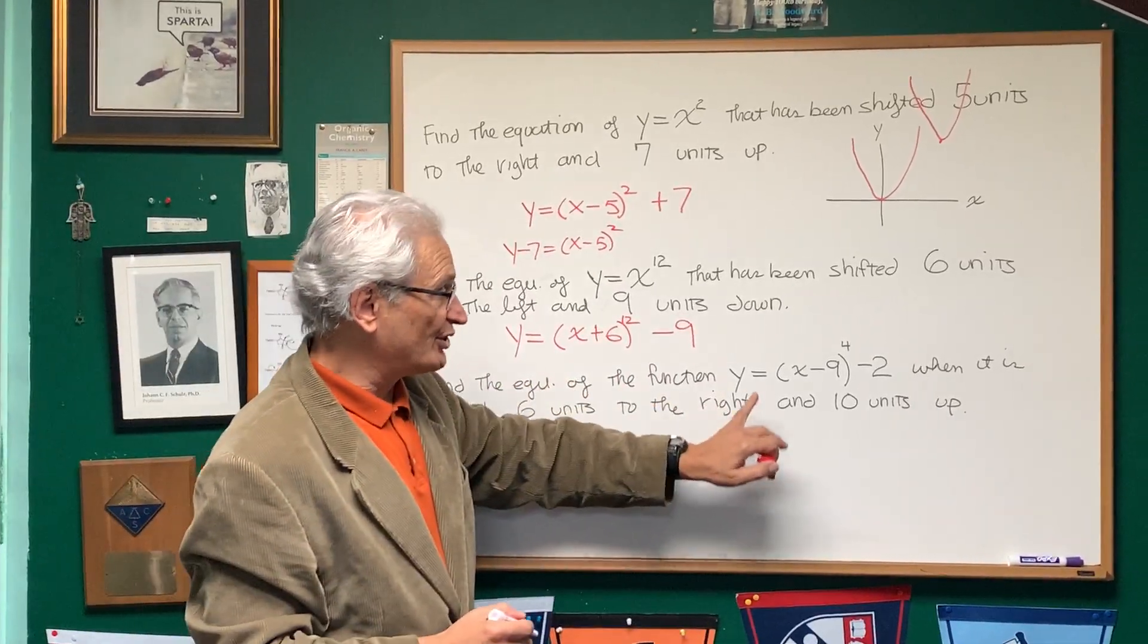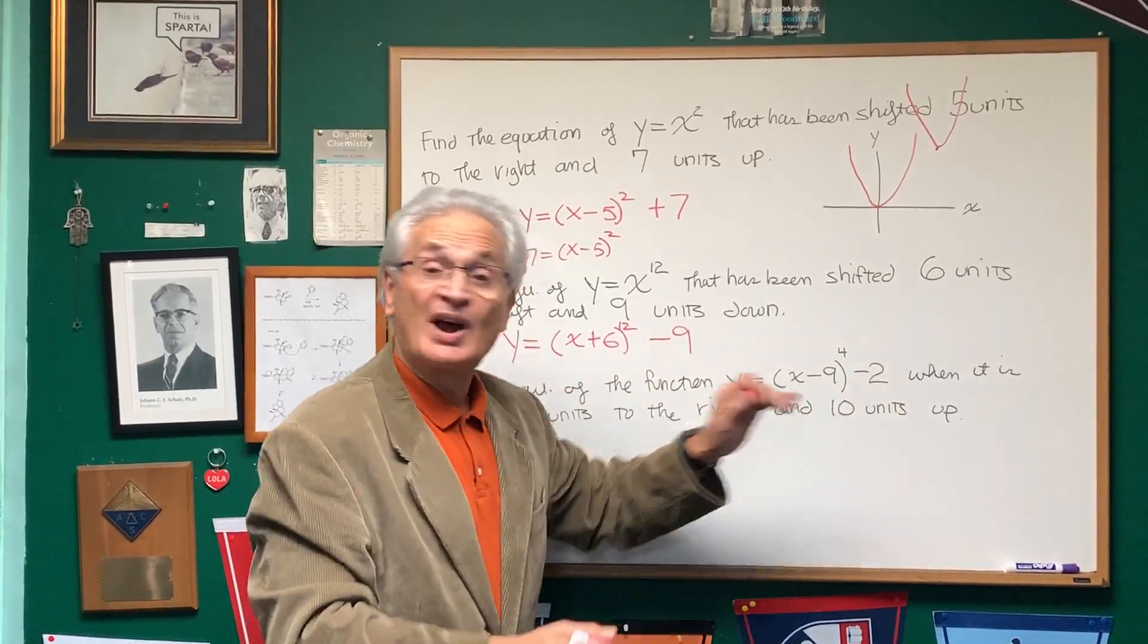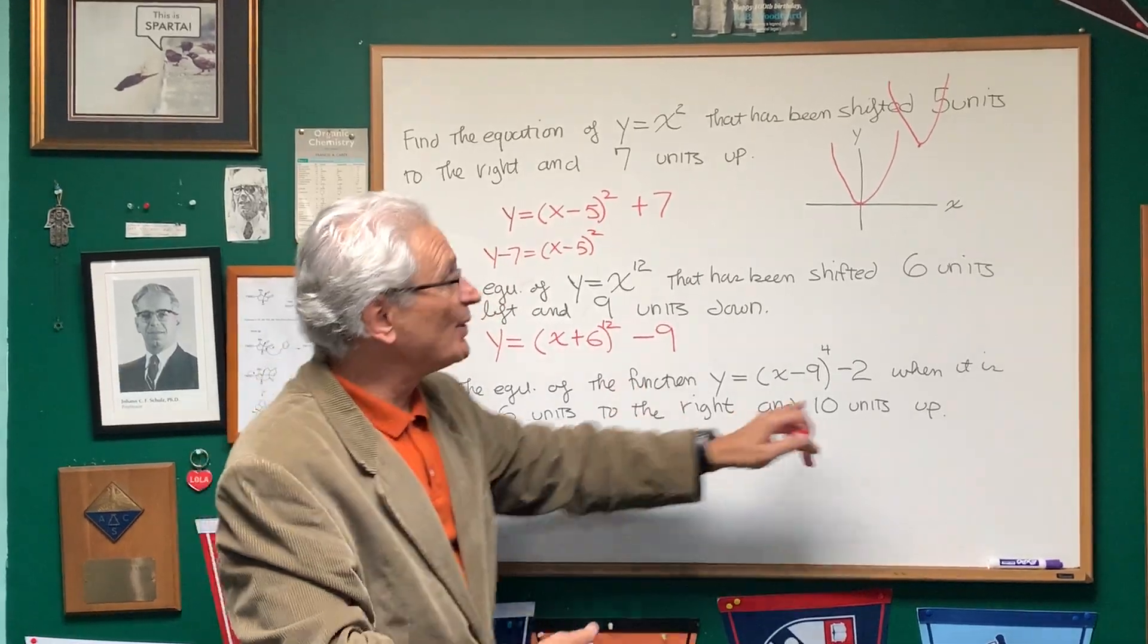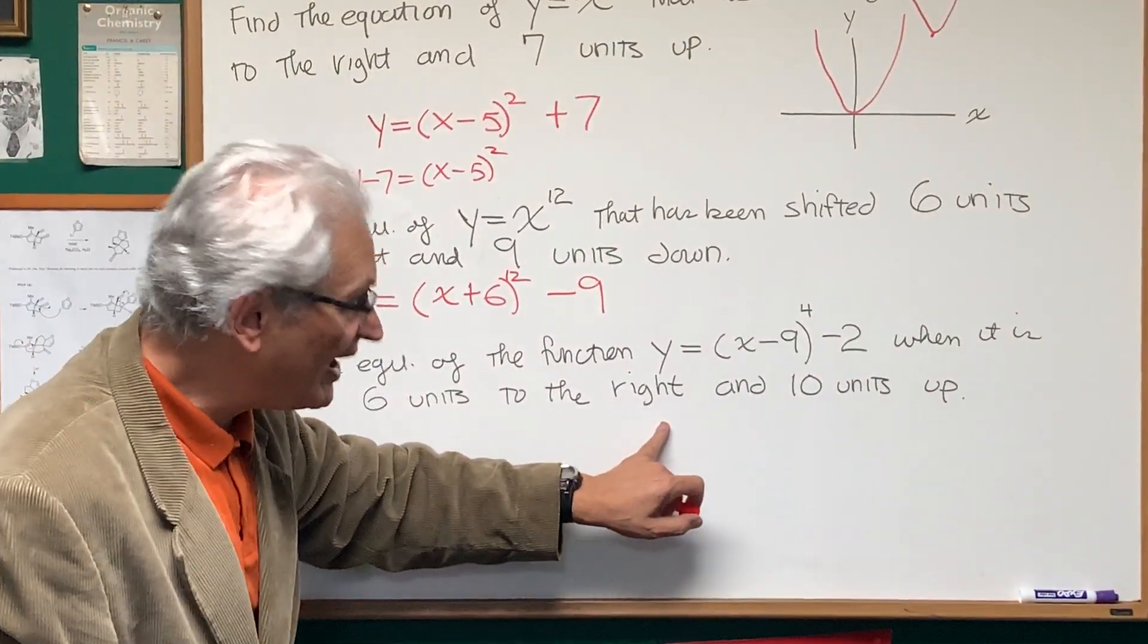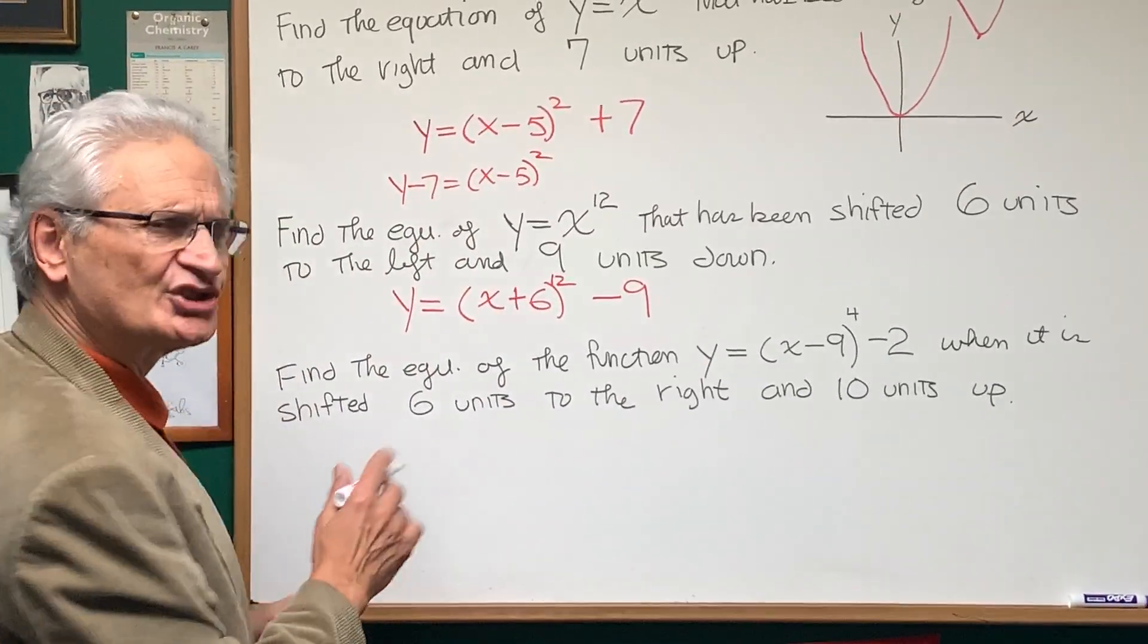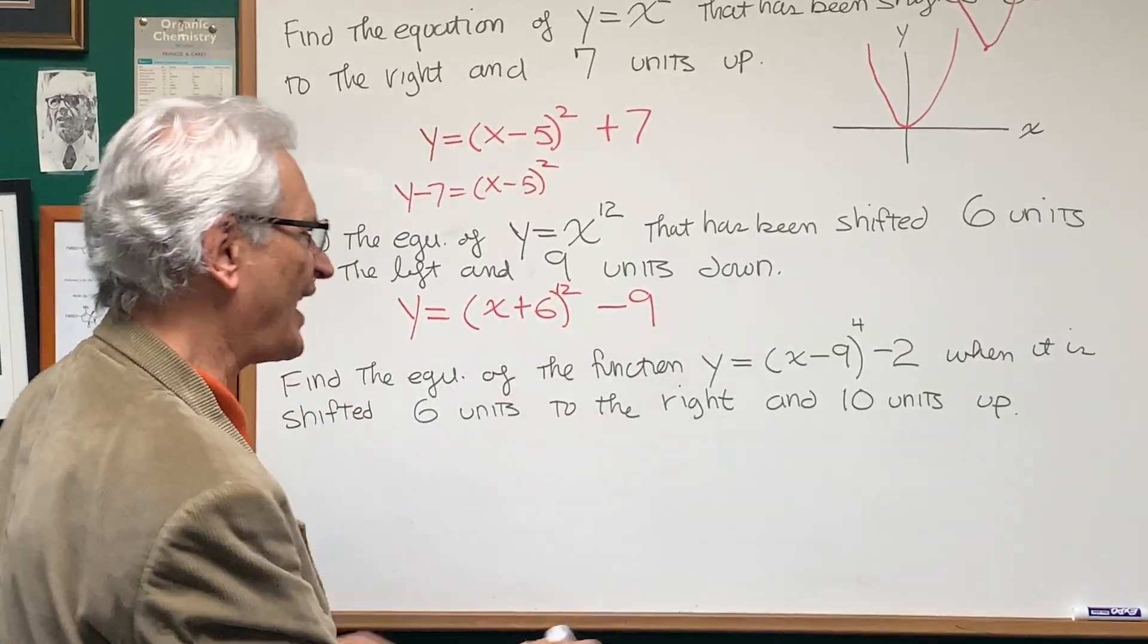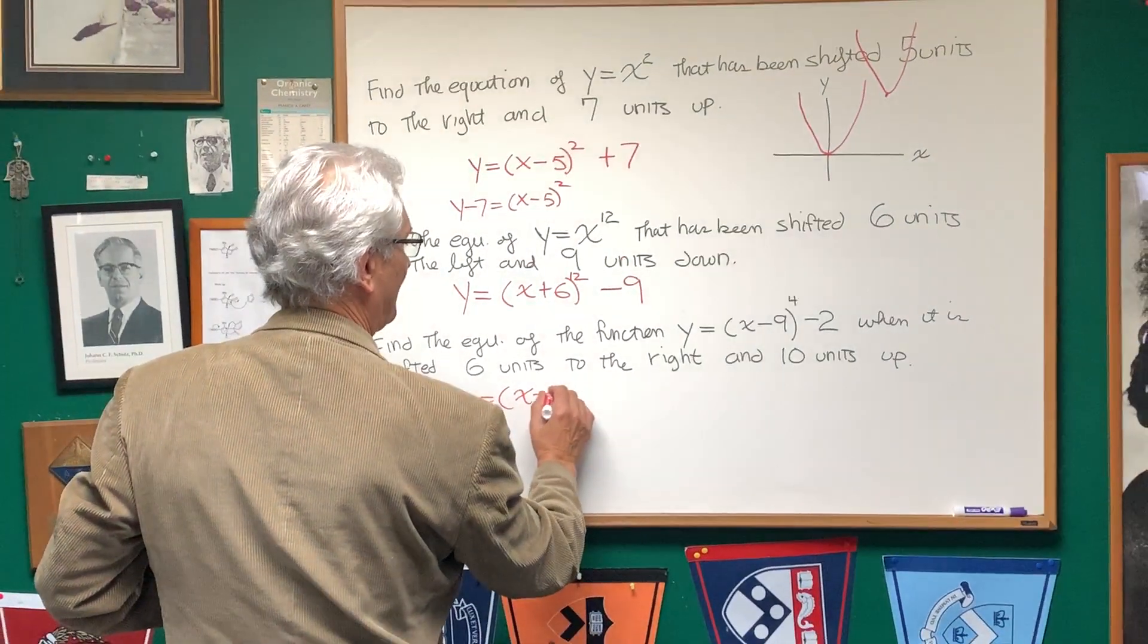Find the equation of the function y = (x - 9)⁴ - 2. This equation has already been translated, and we want to translate it further when it's shifted six units to the right and ten units up. Well, remember, when we shift to the right, we're going to subtract from the expression with the x value. So it's x - 9, and six units to the right, we're going to subtract a further six, to the fourth power, and then ten